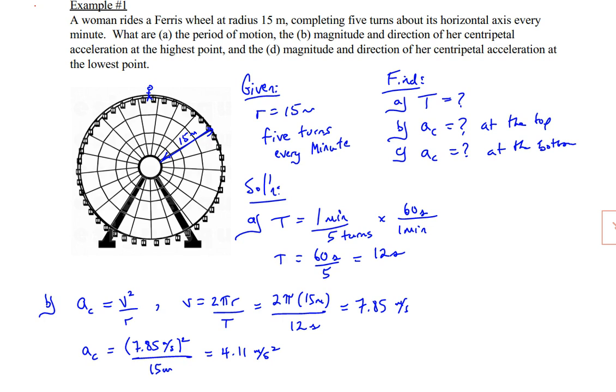Well, it is an acceleration that is towards the center. Centripetal acceleration is a center-seeking acceleration. In class, we'll do an activity where I'll show you how we can show that it actually always points towards the center. So due to this changing direction, we get a centripetal acceleration that is downwards. So at the very top, she experiences an acceleration towards the center of the circle, which is down.